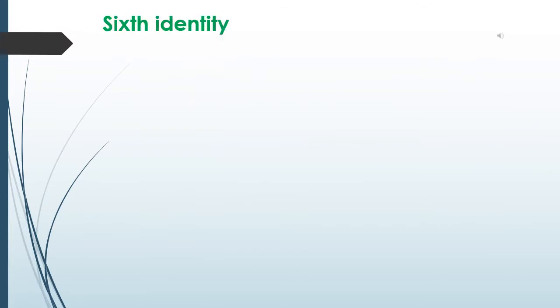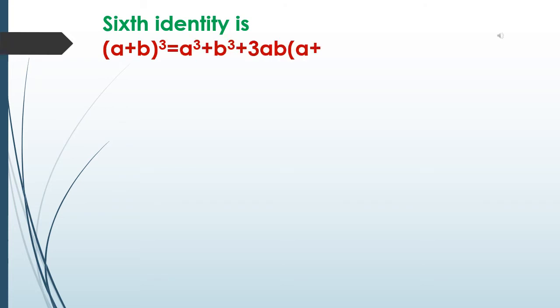The sixth identity is: (a + b)³ = a³ + b³ + 3ab(a + b).